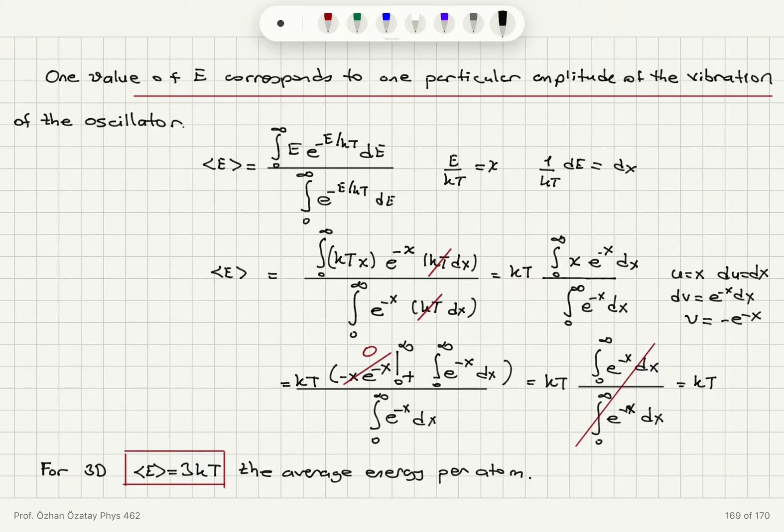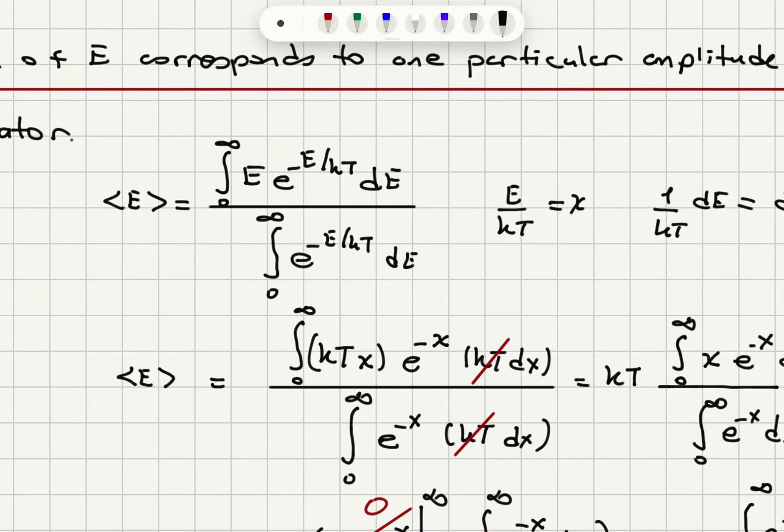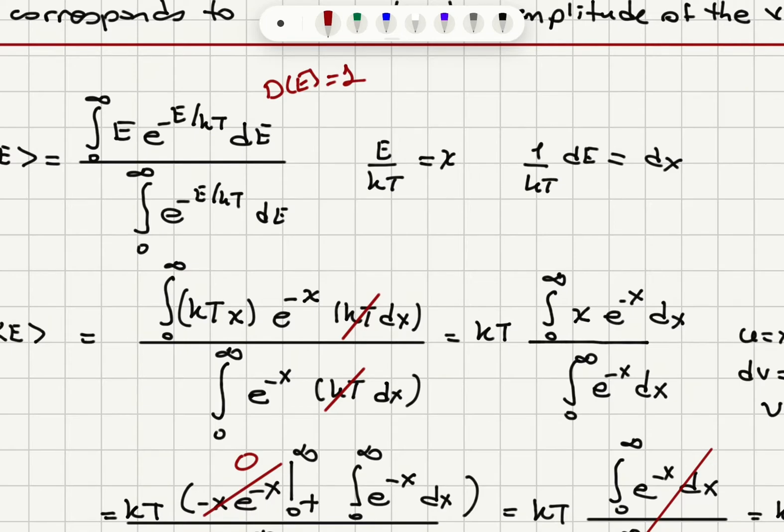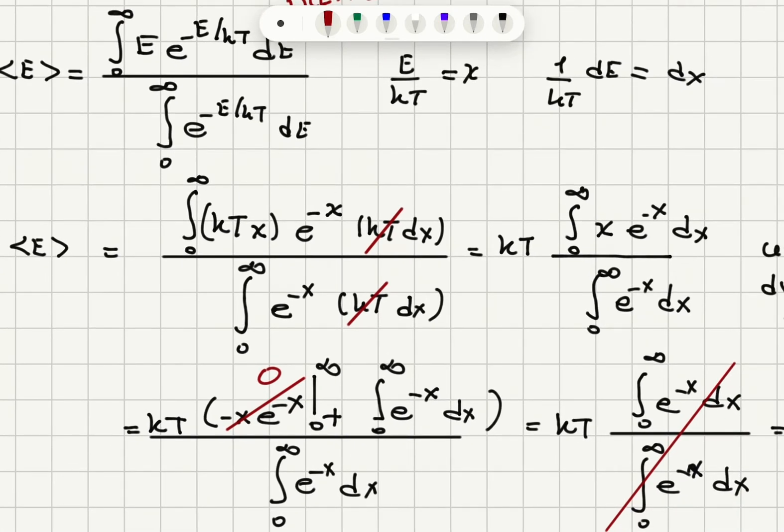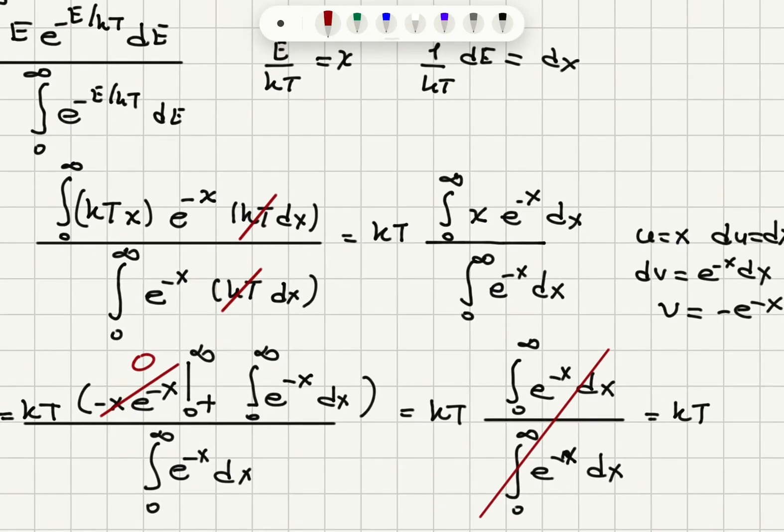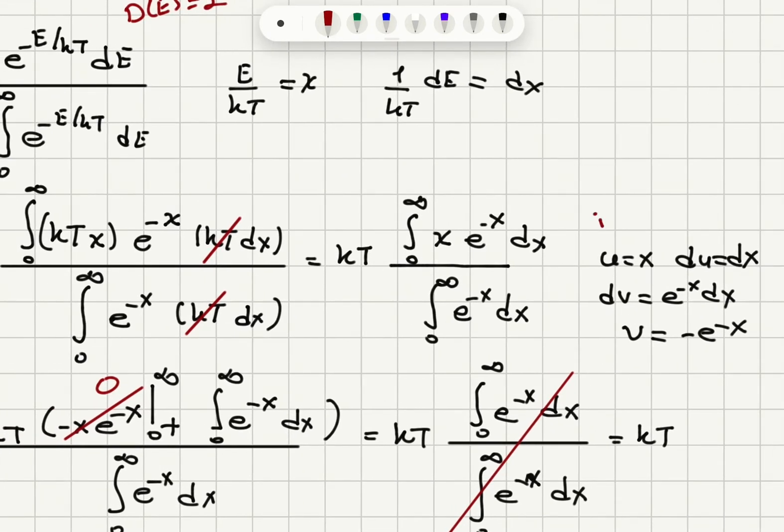If you do this calculation explicitly, integral from 0 to infinity, E, e to the minus E over kt, dE. Density of states is 1 here, so we don't have degeneracy. For E over kt equals x, dE over kt is dx. When E goes from 0 to infinity, x goes from 0 to infinity. For E, I substitute kt x. For e to the minus E over kt, I substitute e to the minus x. For dE, I substitute kt dx. I do the same at the bottom for the partition function. Kt's will cancel. So I find there is one kt remaining. Integral 0 to infinity, x, e to the minus x dx, divided by integral 0 to infinity, e to the minus x dx.